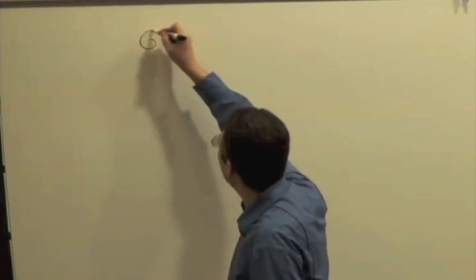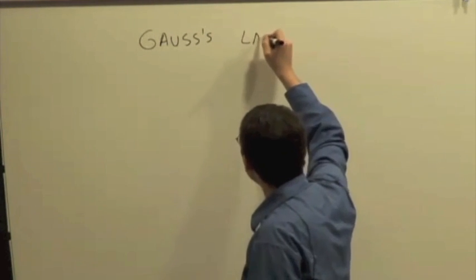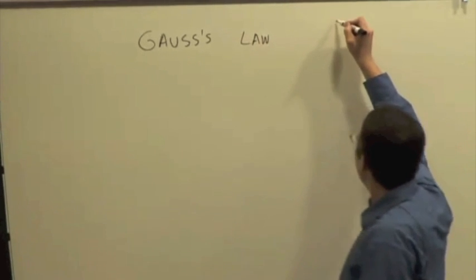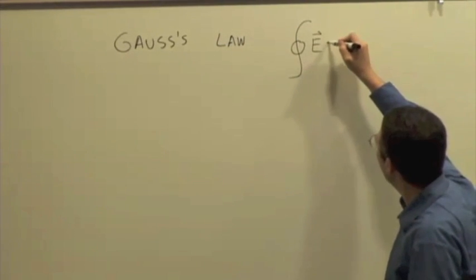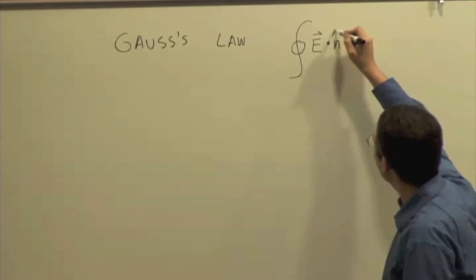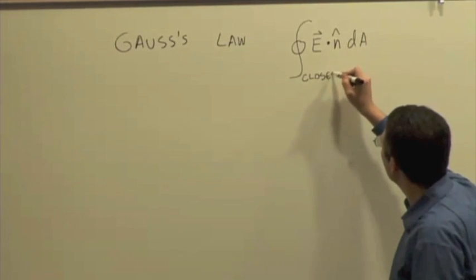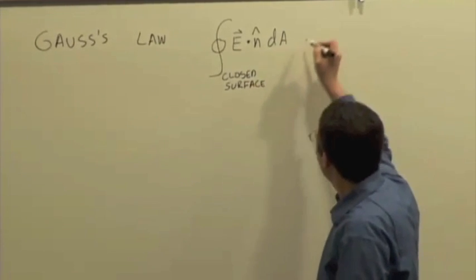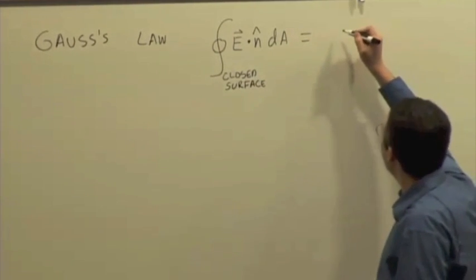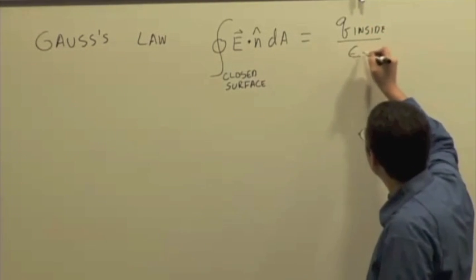So we saw Gauss's law, which says that the pattern of electric field over a volume, which we can calculate using this quantity called flux, E dot n hat dA over a closed surface, is related to the charge inside. So it's equal to Q inside divided by a constant.